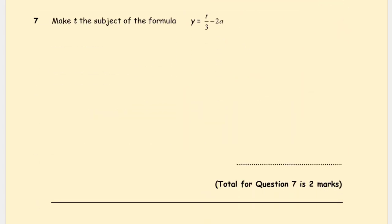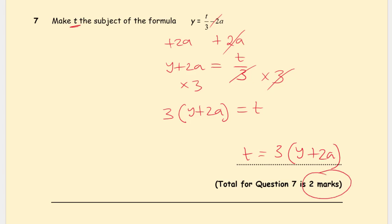Question 7: y = t/3 - 2a, make t the subject. Now 2a is not being divided by 3, so we can just get rid of this one first. Add 2a on both sides. y plus 2a equals t over 3, as minus 2a plus 2a leaves 0. Dividing by 3, so we need to multiply by 3 both sides. You can multiply the individual terms or leave it as brackets. So 3(y + 2a), and 3 and 3 cancel out, left with just t. So t equals 3(y + 2a). Two marks.